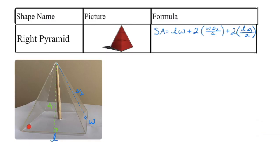My shape happens to be a square pyramid because the base is a square, but I'm going to treat it as a rectangular pyramid — a square is a type of rectangle. We're looking for the area of all the faces. On the bottom, we'll have either a rectangle, square, or whatever shape the base is. For a rectangular pyramid, I find the area by multiplying length times width to get the area of that rectangle on the bottom.